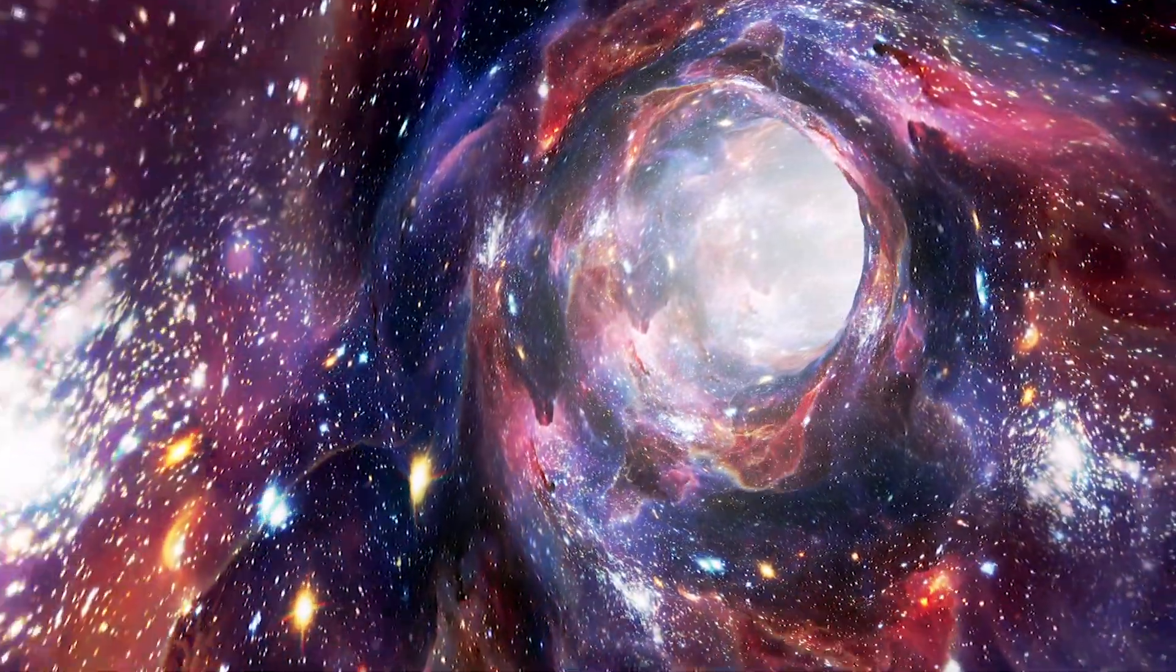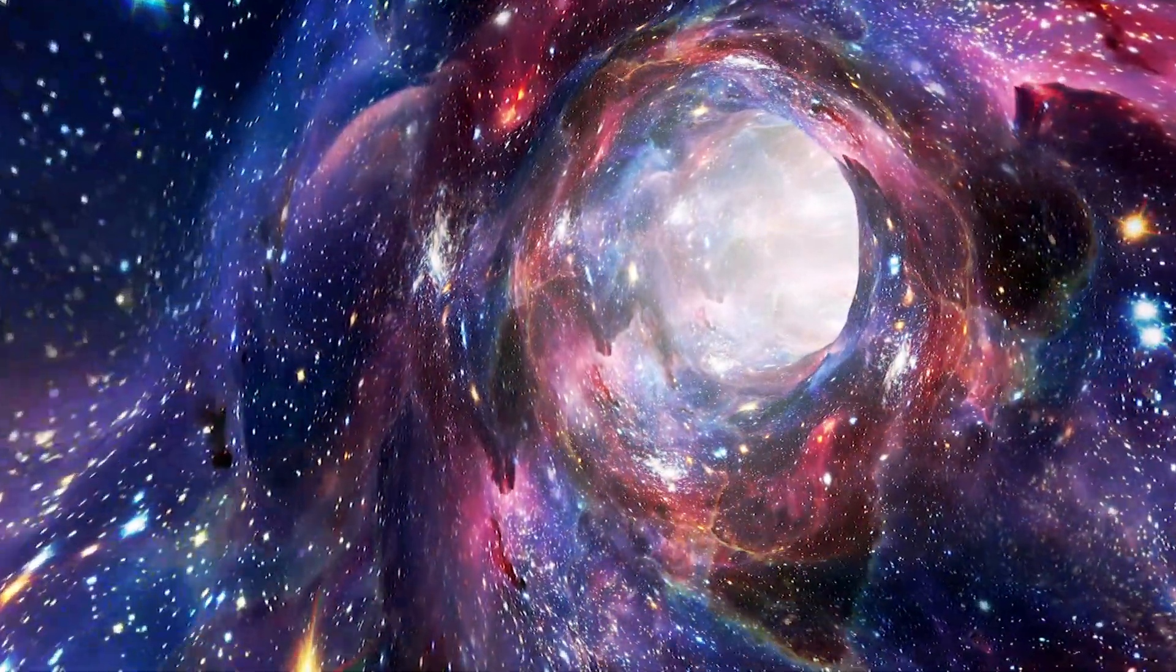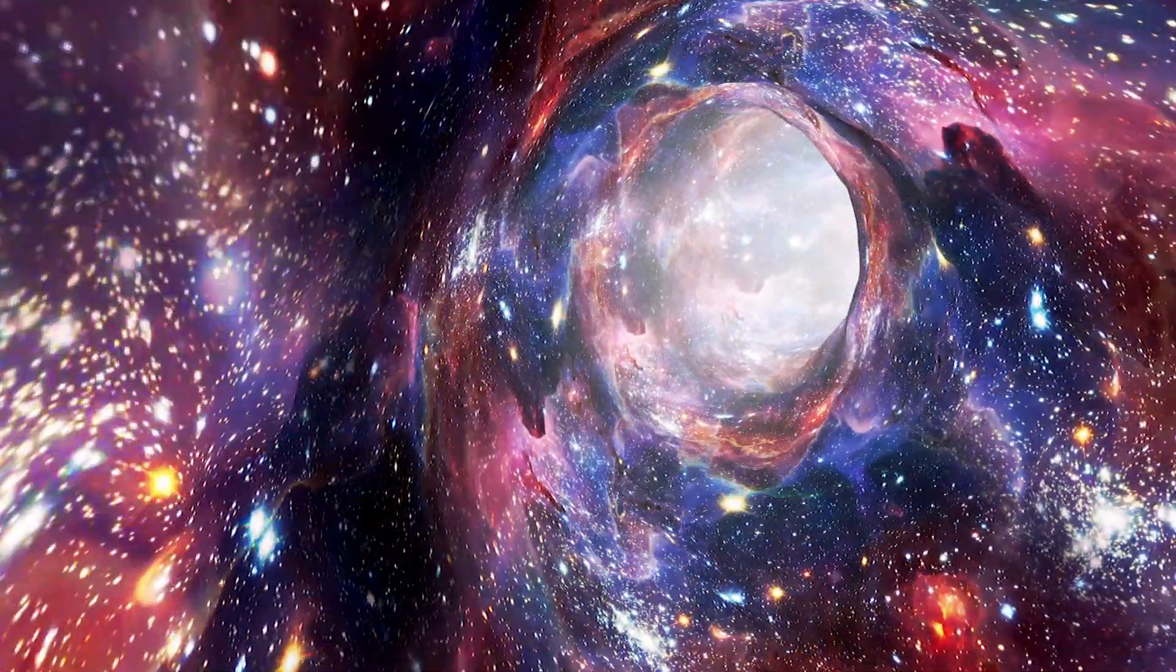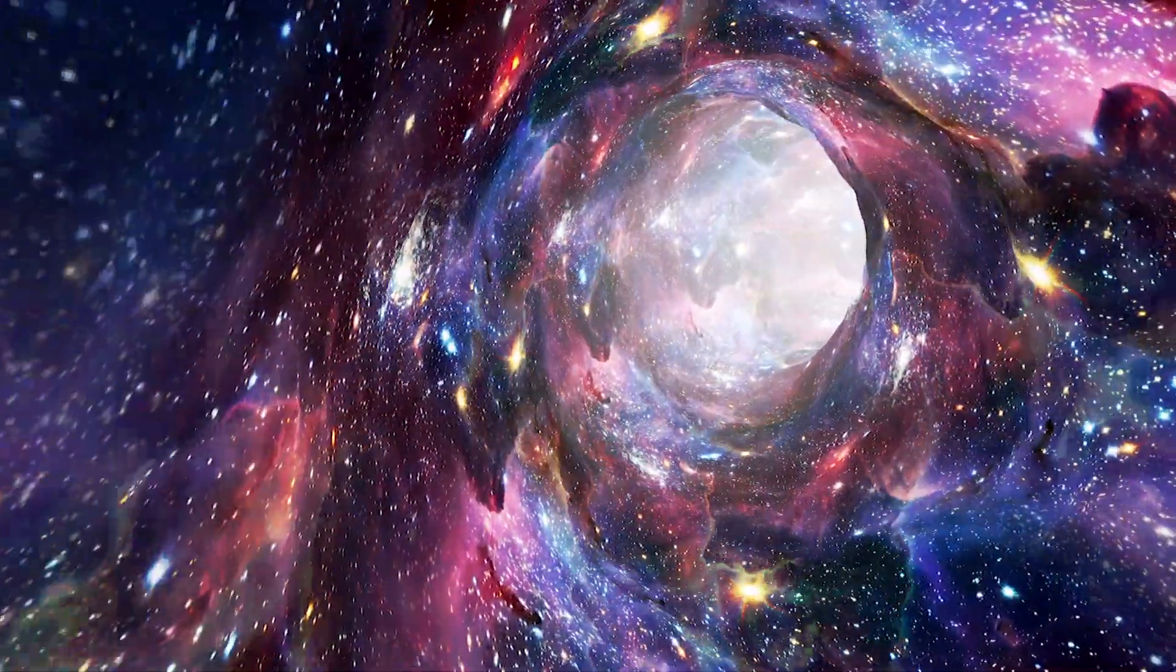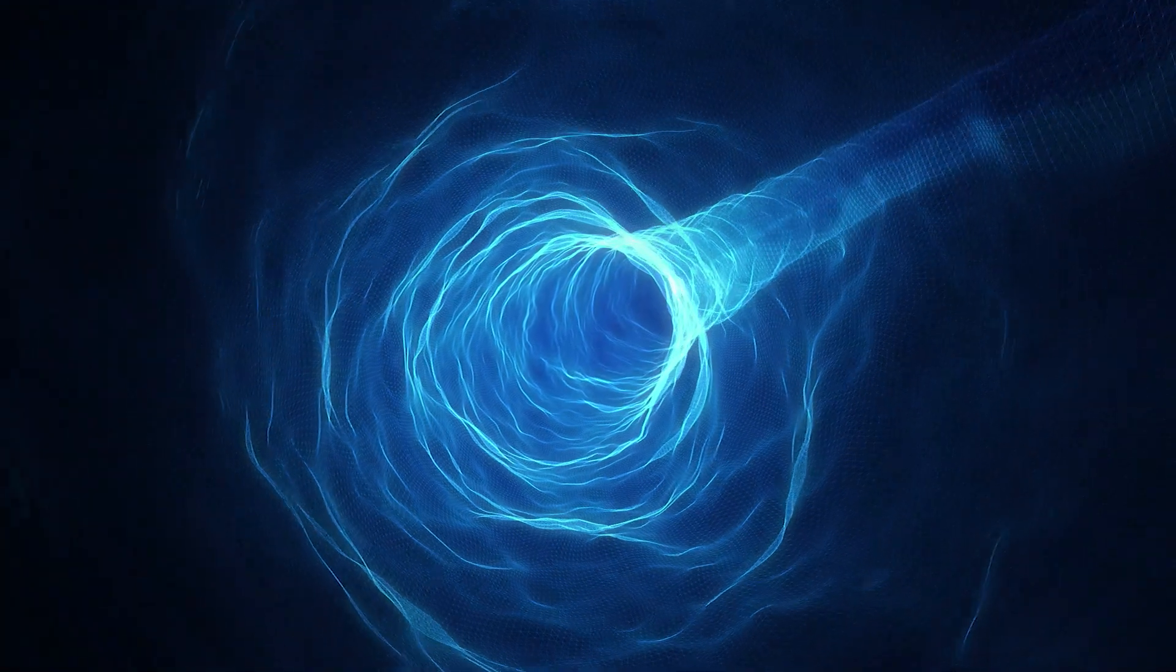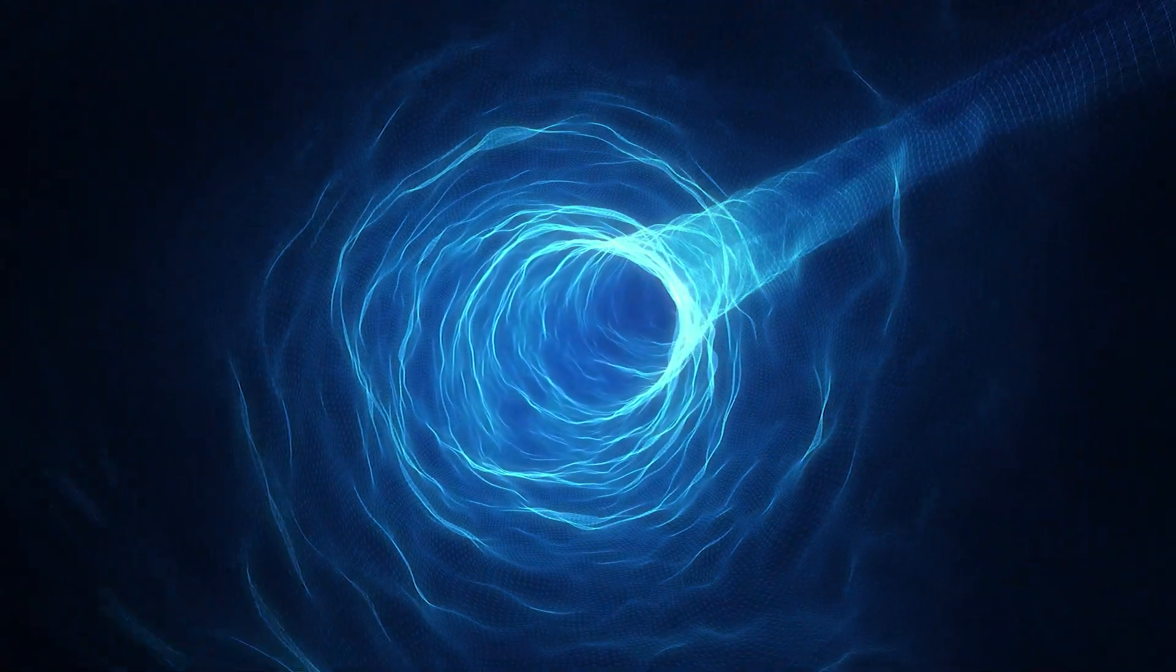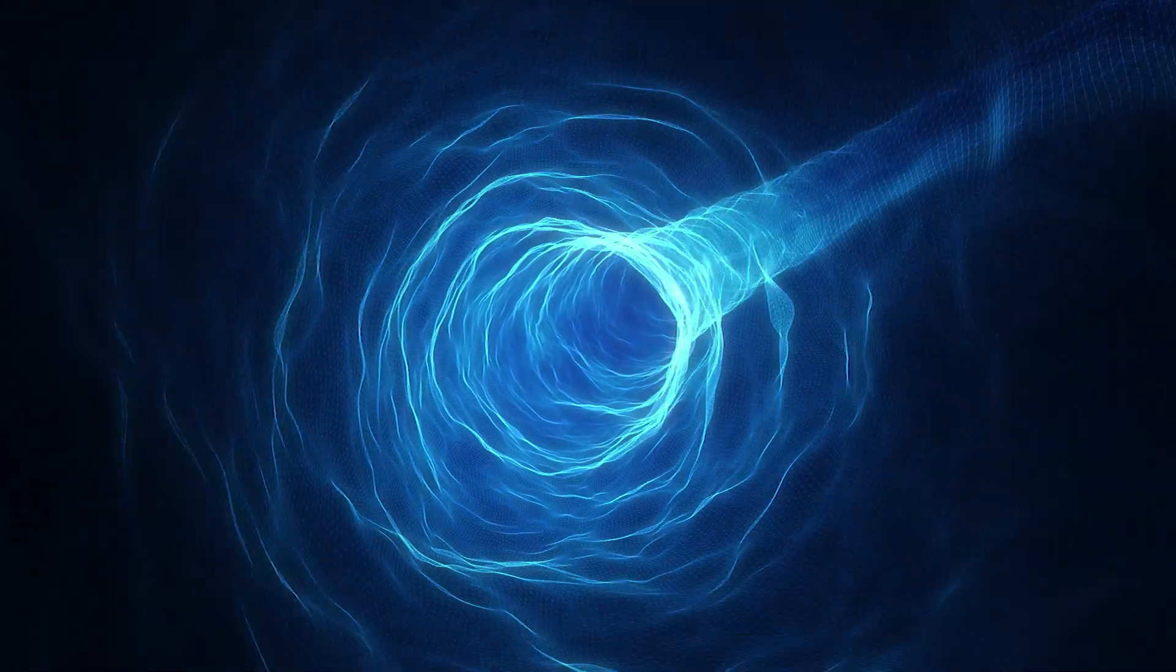Inside this donut-shaped vacuum, spacetime could get bent upon itself using focused gravitational fields to form a closed timelike curve. To go back in time, a traveler would race around inside the donut, going further back into the past with each lap.